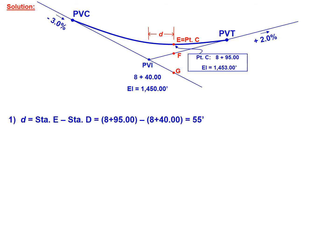We're going to start by calculating D. We're going to subtract the station of our point of interest, which is station 8 plus 95, and take away the station of point D, which is the point on our curve that's associated with the location of the PVI. So we're going to find a distance D of 55 feet.